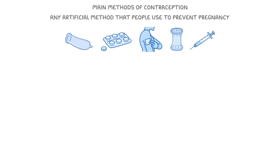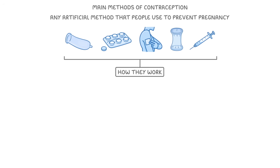In this video, we're going to run through all the main methods of contraception, which is basically any artificial method that people use to prevent pregnancy. The aim is that you'll understand how they all work and can also discuss the pros and cons of each. First though, I just wanted to very quickly recap how pregnancy starts, which isn't in your course, but I think it helps a lot to understand contraception.